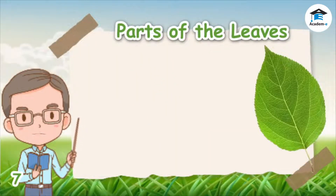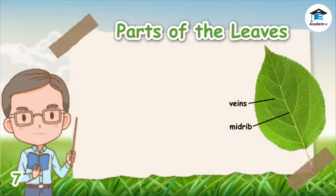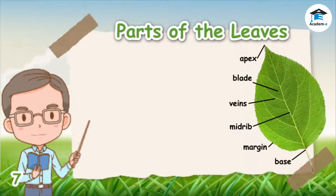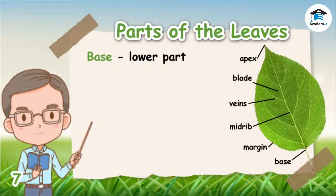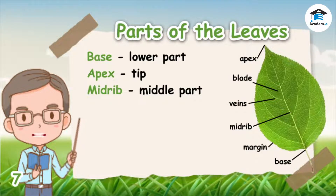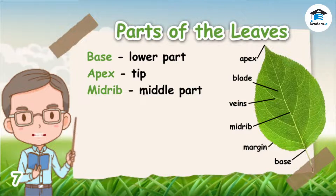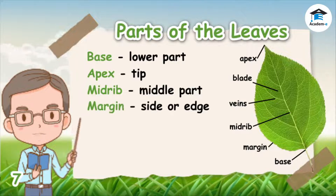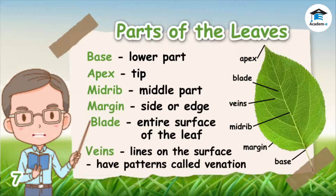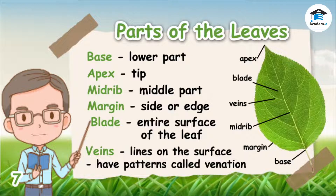A leaf has different parts: midrib, veins, blade, apex, base, and margin. The base is the lower part of the leaf. The tip of the leaf is called the apex. The midrib runs along the middle part of the leaf from the base to the apex. The margin is the side or edge of the leaf. The entire surface of the leaf is called the blade. The lines on the surface are called veins, and the pattern of the veins is called venation.